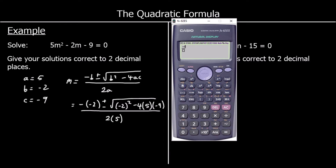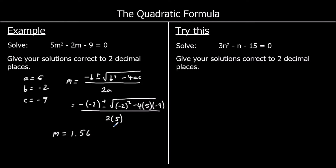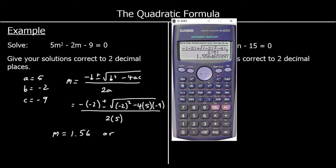So we need the fraction button first. Minus negative 2, plus first, we've got the square root of negative 2 squared — putting it inside a bracket, otherwise the calculator would get it wrong — minus 4 times 5 times negative 9, over 2 times 5. So we've got 1.56 as our first answer to two decimal places. Or our second answer — changing the plus to a minus — we get negative 1.16.